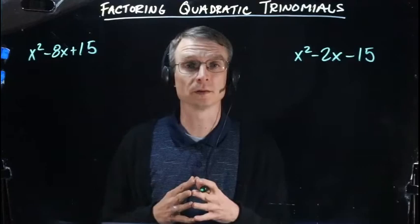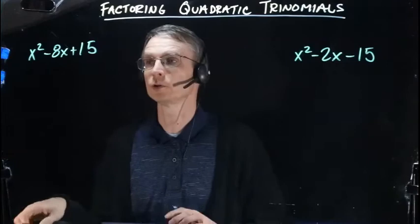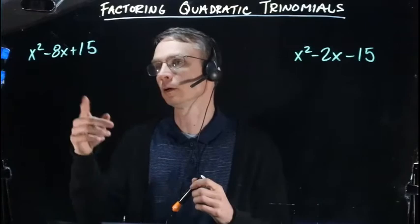What we have here is x² - 8x + 15. First thing we're going to do is check for greatest common factor. There's no variables common here, there's no number we can factor out, so there's no greatest common factor.